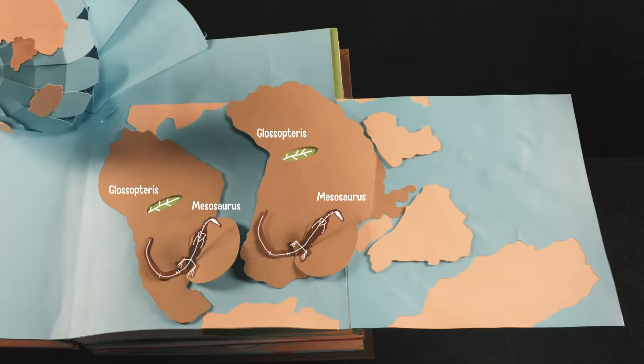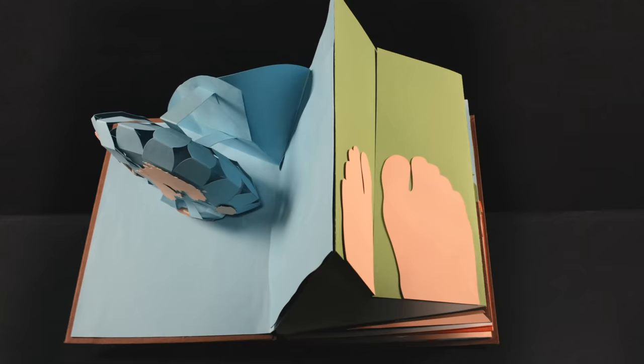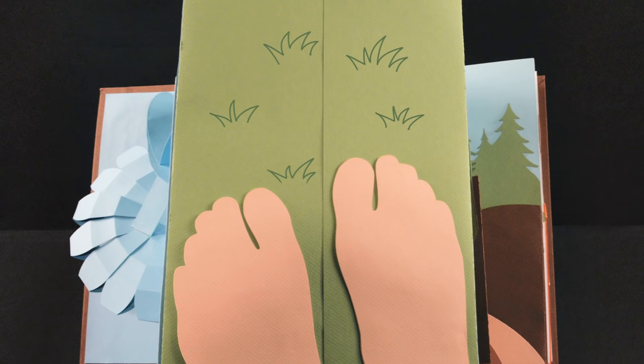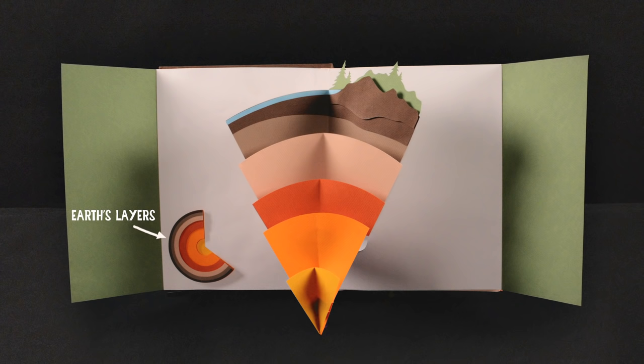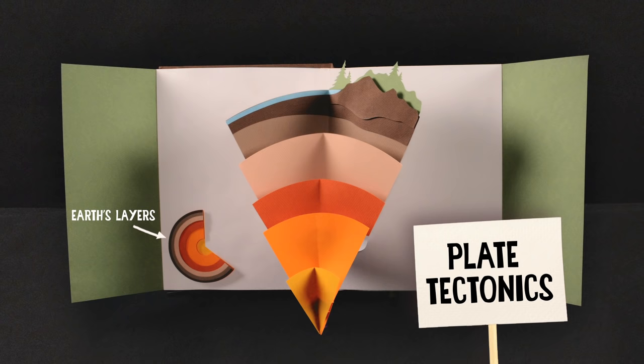However, this evidence does not account for how the continents moved apart. For that, we'll need to take a close look at the earth below our feet. Though you may not realize it, the ground below you is traveling across the earth at a rate of about 10 centimeters per year, or the speed at which your fingernails grow.